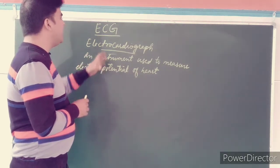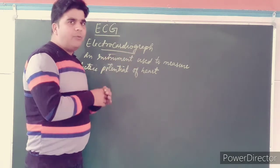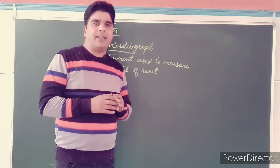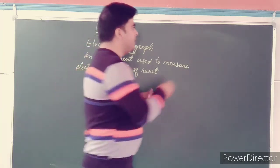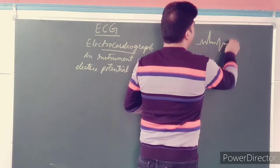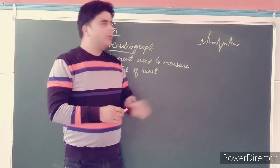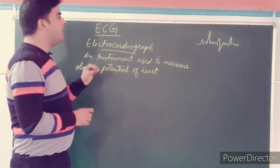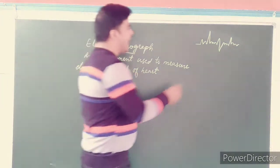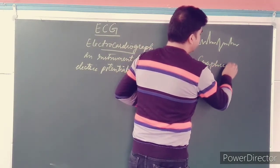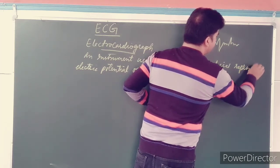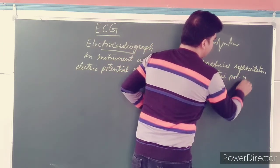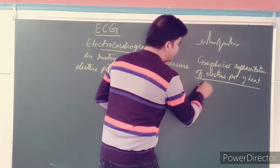Now you will be confused here — Electrocardiograph, it's the machine, not the graph. When a doctor advises you to do an ECG, the paper that comes out with the graphic representation — that is not called Electrocardiograph. The machine we call Electrocardiograph, while the graphical representation of the electric potential of the heart is what we call Electrocardiogram.